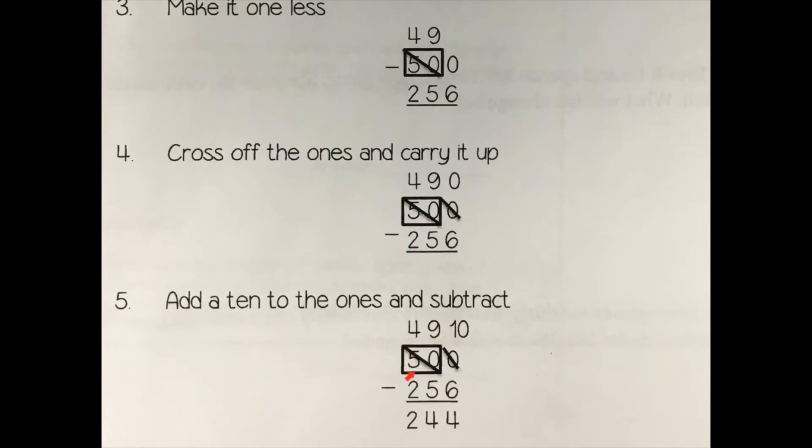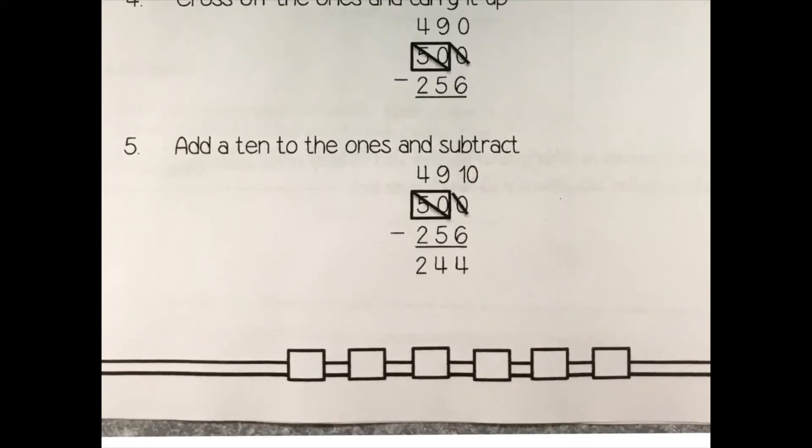So it looks like this. So you should have your 5 changes to a 4, your zero inside the box changes to a 9, and your zero outside the box changes to a 10. Then you can subtract to get 244.